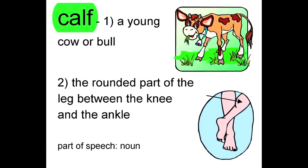Some words will have two definitions, like this one. The first definition of calf is a young cow or bull. The second definition of calf is the rounded part of the leg between the knee and the ankle. The part of speech for both meanings is noun since these are both a person, place, or thing.